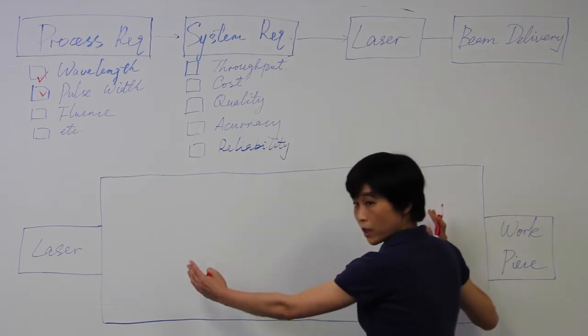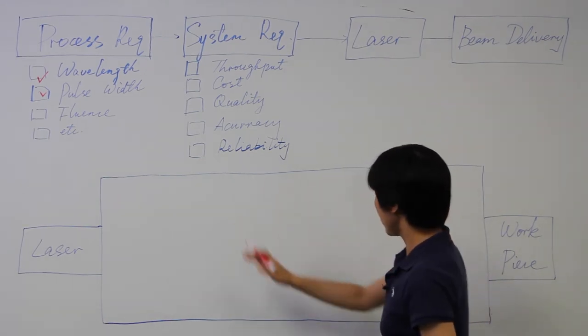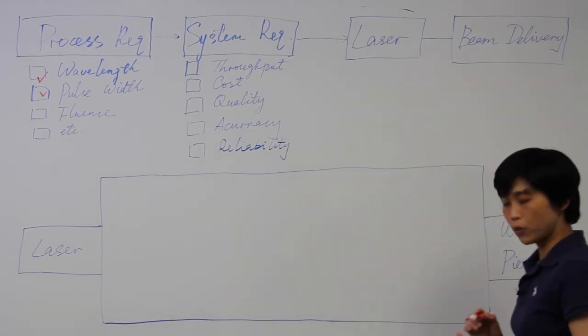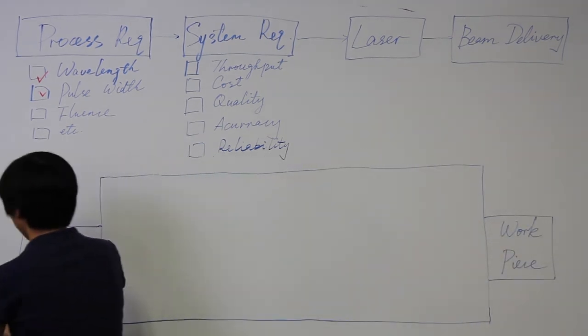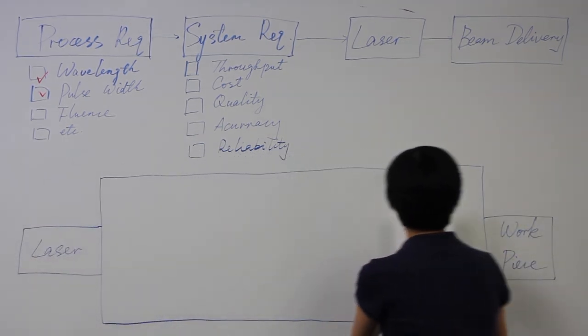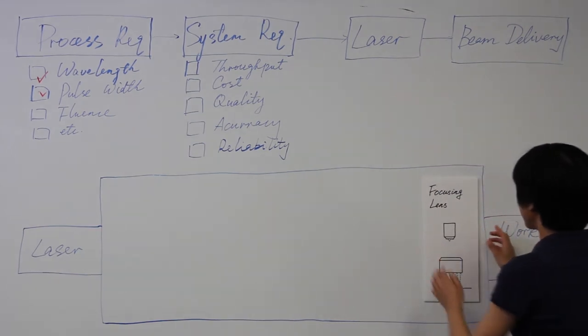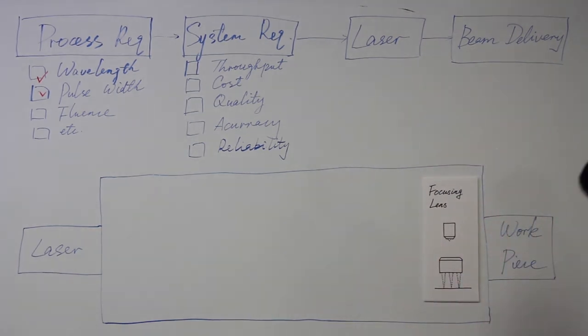That's based on the beam delivery system. Now we can see what can we include into this box. The very basic laser processing system includes a laser and the focusing lens. The focus spot size at work surface determine the fluence.